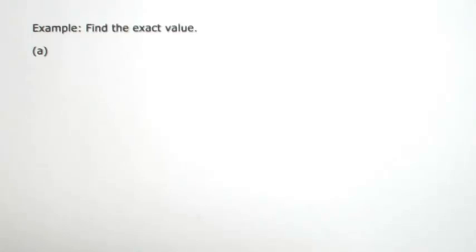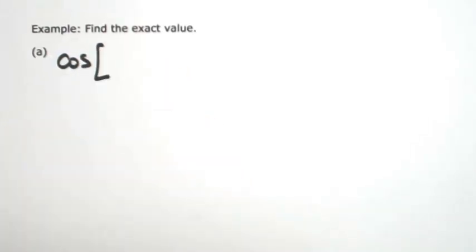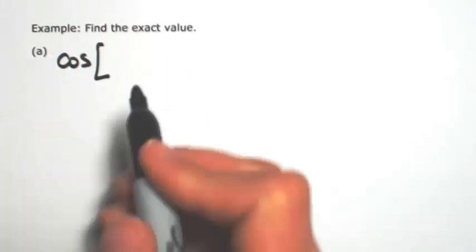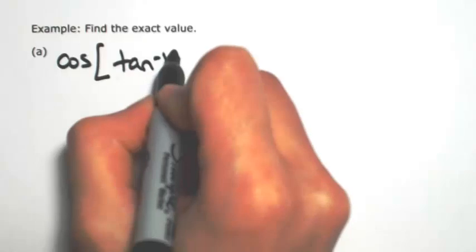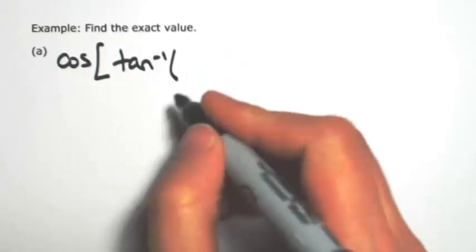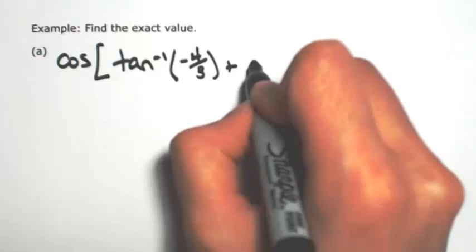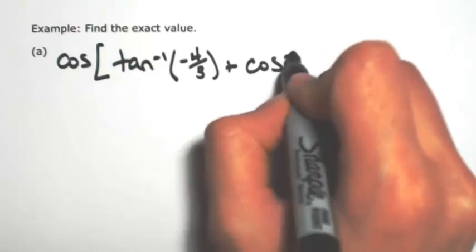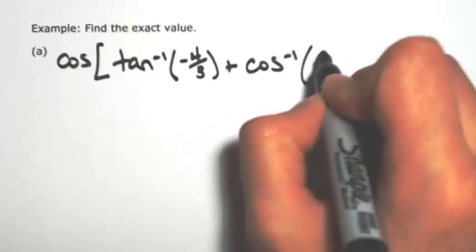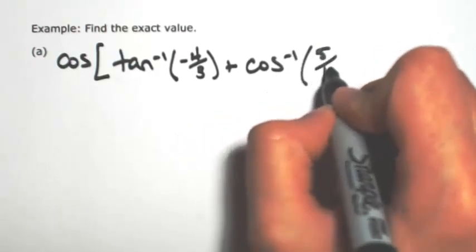Let's do some examples that incorporate the sum and difference formulas for sine and cosine, along with inverses. For this first one, let's do the cosine of the inverse tangent of negative 4 thirds plus the inverse cosine of 5 thirteenths.